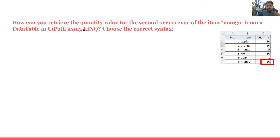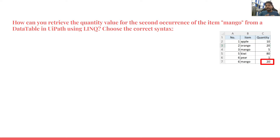The question is: how can you retrieve the quantity value for the second occurrence of the item mango? The table shows mango in the third row and again in the seventh row — that is the second occurrence. So it is asking for the second occurrence of mango from the data table in UiPath using LINQ. Remember, in LINQ you can write the query to retrieve something in multiple different ways — nobody will say this is the only way.